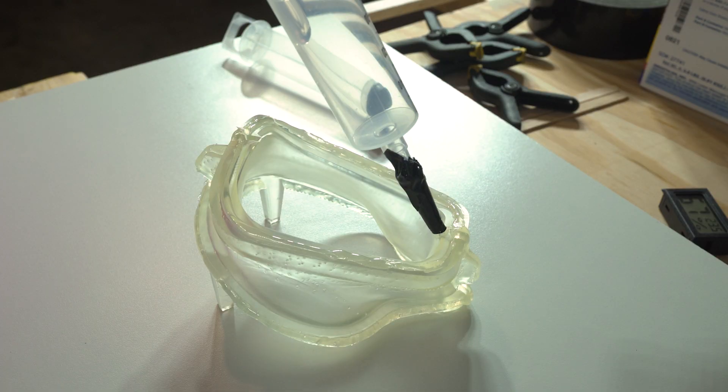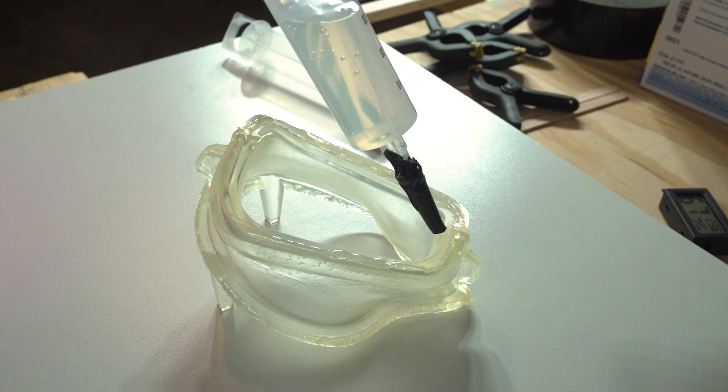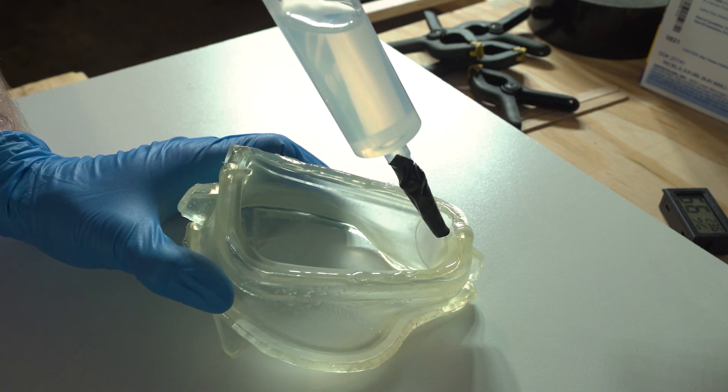You can see here just how viscous the SortaClear 18 is. While pouring it into the syringe, I created more bubbles. This was not going to work, so it went back into the vacuum chamber for another minute or so. That cleared things up nicely.